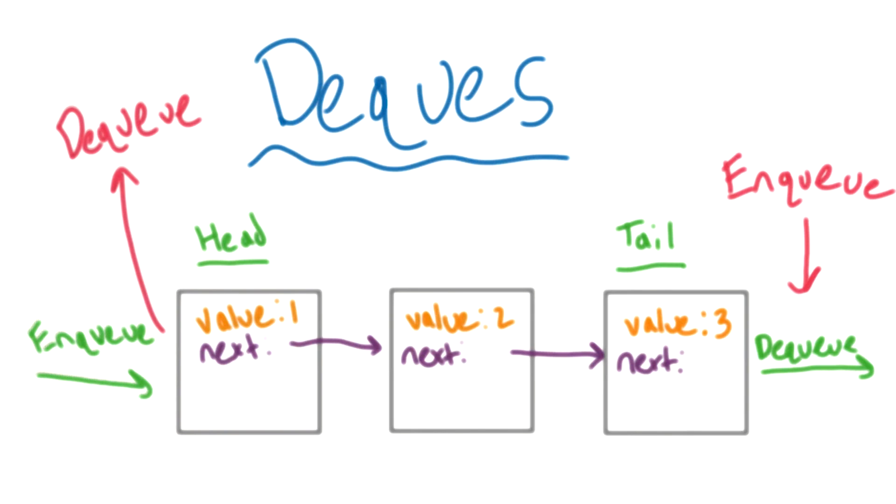You could treat it like a stack, and add and remove elements from the same end. Or you could treat it like a queue, and add elements on one end, and remove them from the other.